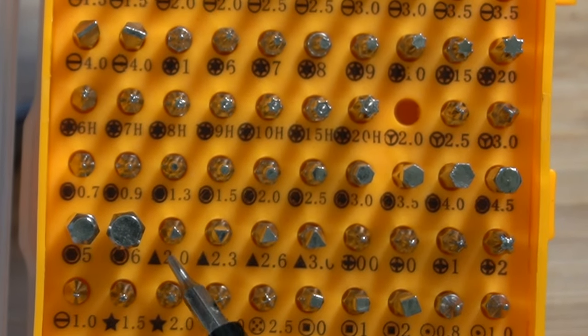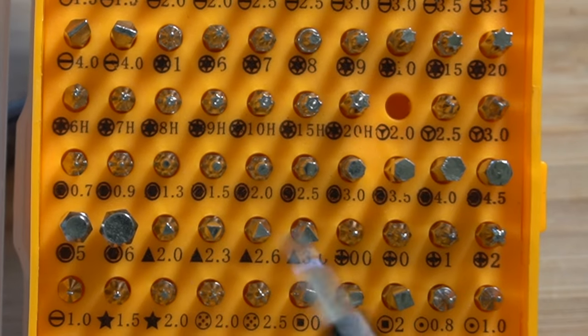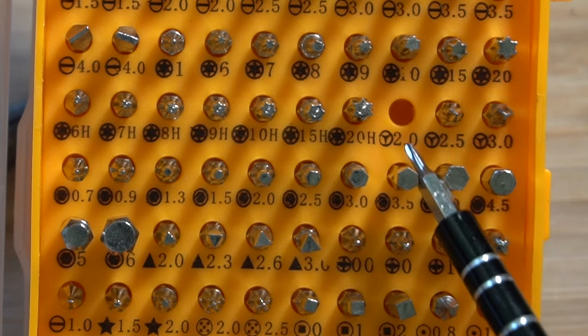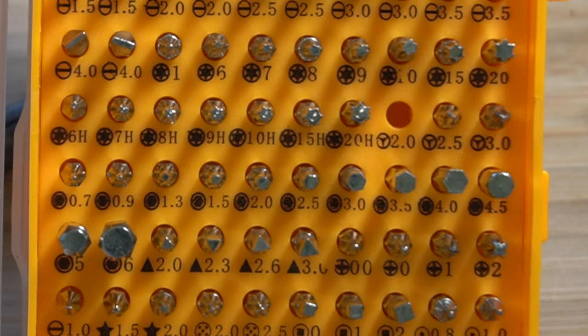But for the Contigo bottle, you actually need smaller than 2.0, I think 1.8. So I'll leave links to a screwdriver kit that contains the right triangle one in the description down below. However, this tri-star 2.0 did work. So luckily I didn't have to buy a second kit.